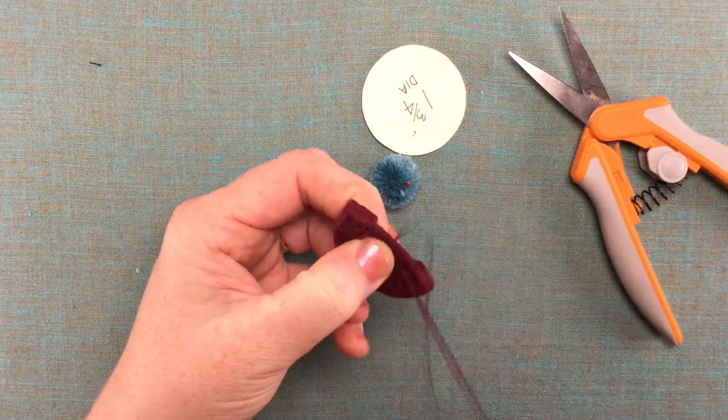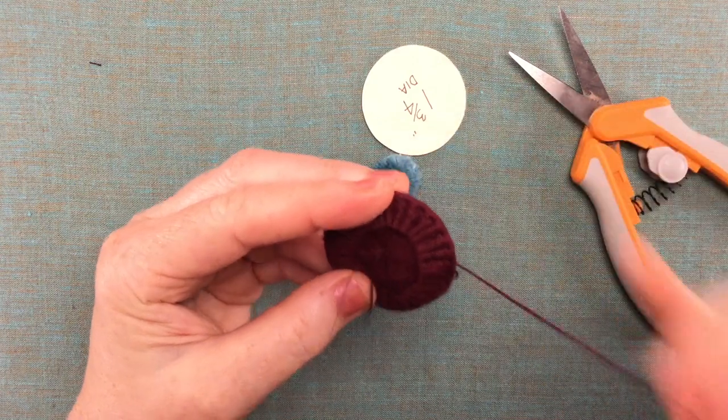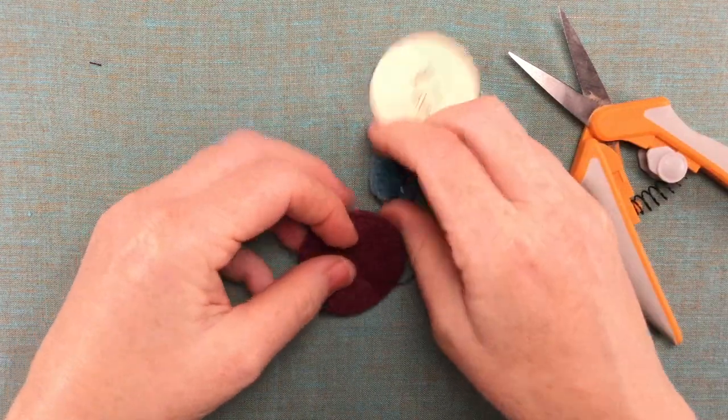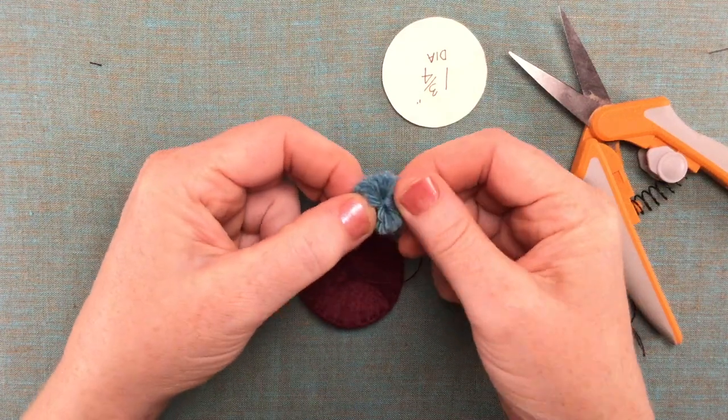So let's just fold the hat in half here so that we can find the center and then you can eyeball the center on that fold. So let's get our knot started on the underside.